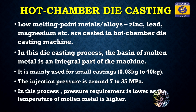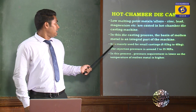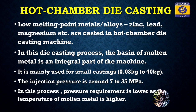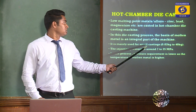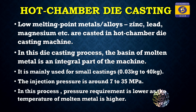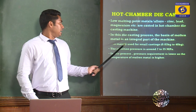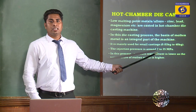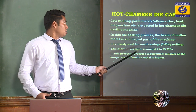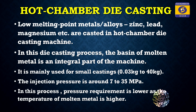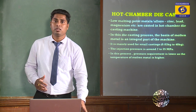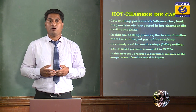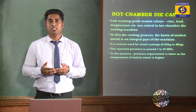In this process the basin of molten metal is an integral part of that machine. It is mainly used for small casting — smaller metal parts in the range of 0.03 kg to 40 kg. The pressure used in this process is around 7 to 35 MPa. The pressure requirement is lower because the temperature of the molten metal is higher in Hot Chamber Die Casting Process.